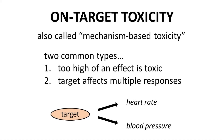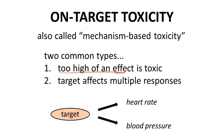On-target toxicity is often also called mechanism-based toxicity because the on-target action of a drug is the same as its mechanism of action. On-target toxicity normally arises from two different situations. First, the response from target binding must be held within a window, and too great of an effect leads to a safety risk. Second, targets can often be associated with multiple response pathways, and maybe one of the other associated responses leads to toxicity.